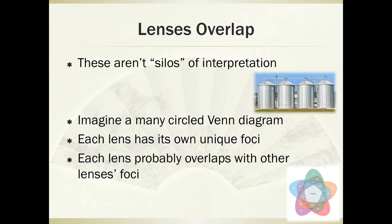Quick example: the historical lens asks us to look at a text in its historical context — when it was written, what it's really about, what historical overlaps exist. Maybe it's a text about kings and queens. Well, kings and queens have power, so that's going to bring in the Marxist lens, which looks at who has power in a society and who doesn't. That's also going to overlap with the feminist lens, which looks at gender roles — why do we have more kings than queens? These lenses are not end-all, be-all standalone silos; there's definitely a lot of overlap.